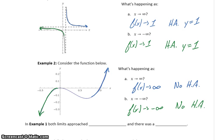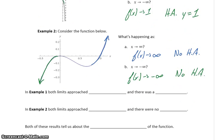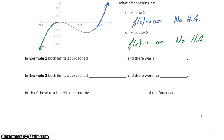So these are examples of two different types of situations we can run into when we take the limit of a function as x approaches either negative or positive infinity. In example 1, we had both limits approaching a number.